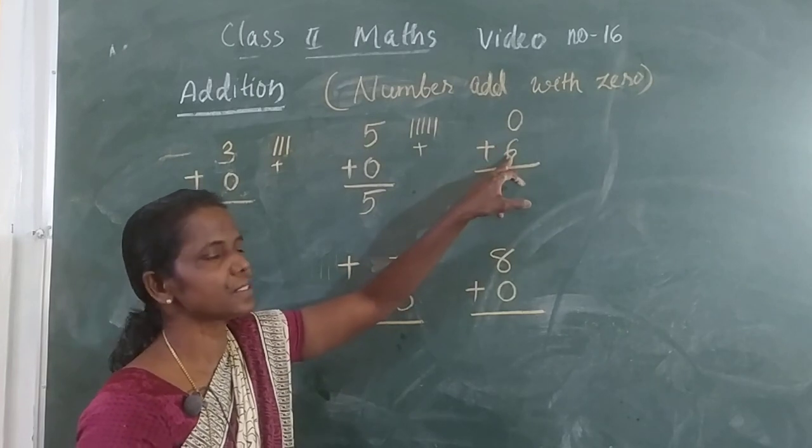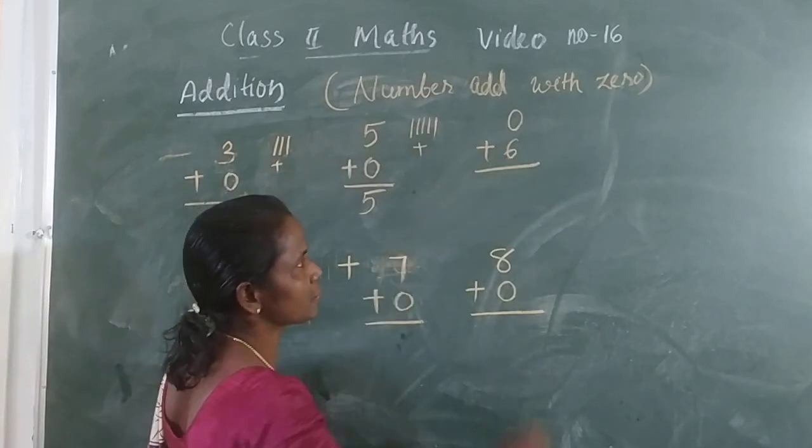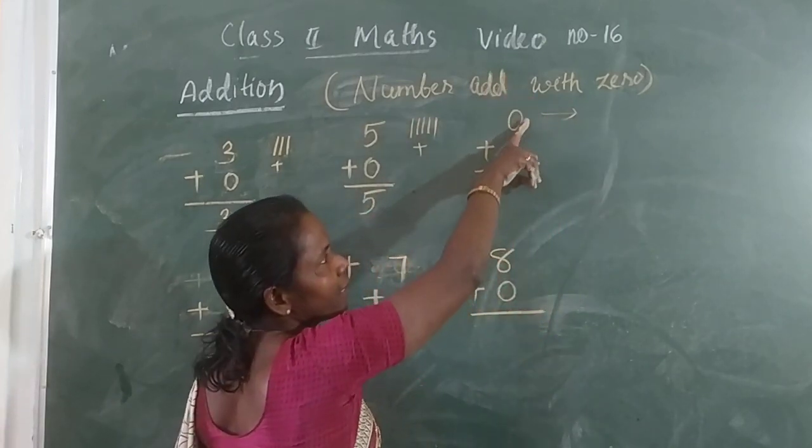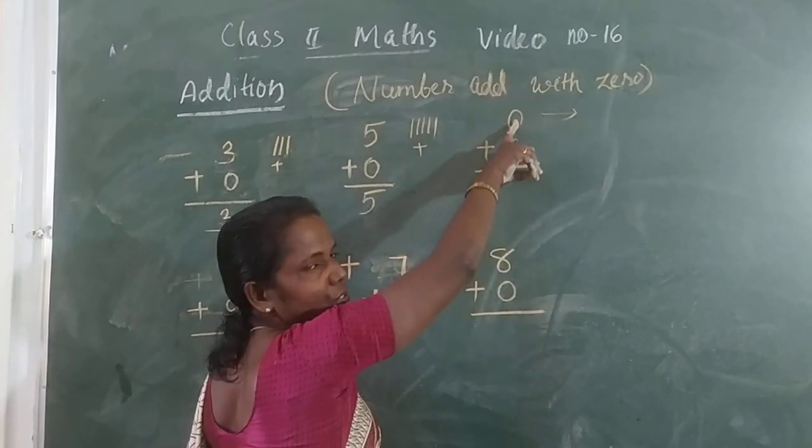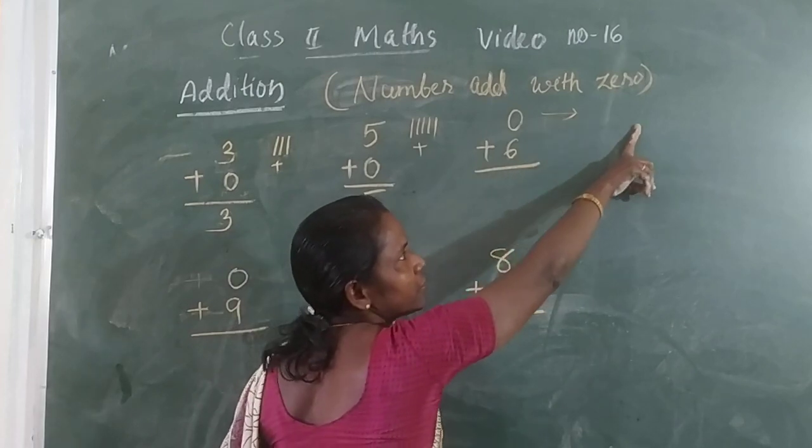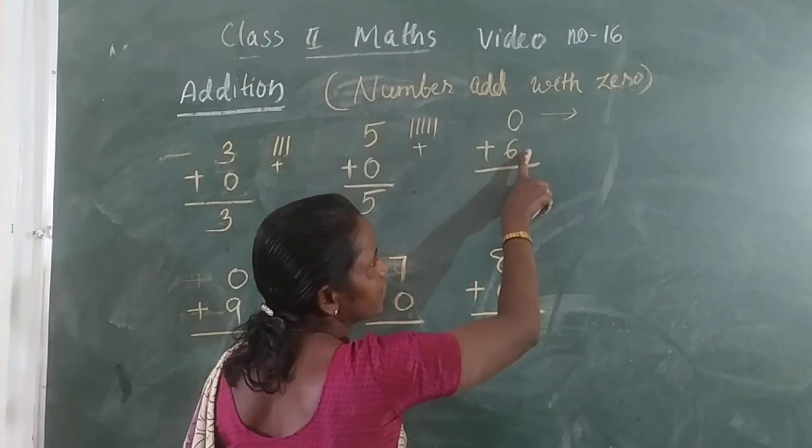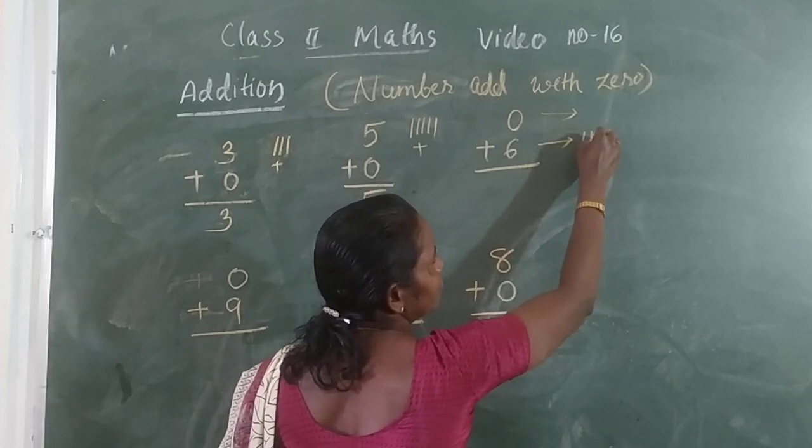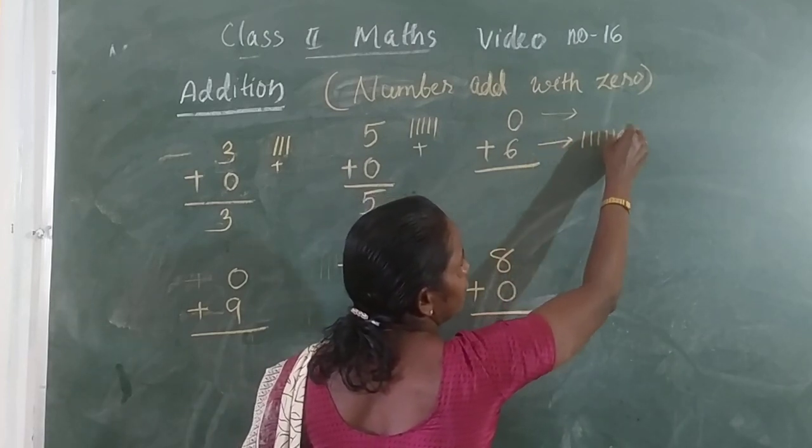So 0 plus 6. 0 plus 6 is what you have added. Look at this place, how many lines? Draw 0 lines. 0 lines means no line. Then below each line, how many? 1, 2, 3, 4, 5, 6.